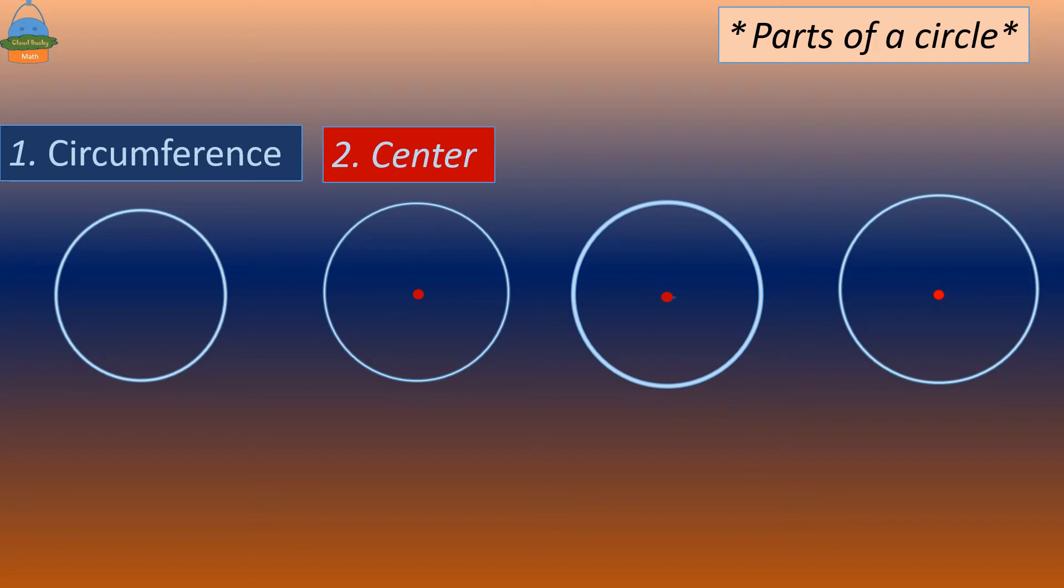We can draw a straight line from the center to any point on the circle and we call this the radius. The diameter is a straight line between two points on a circle, and it passes through the center.